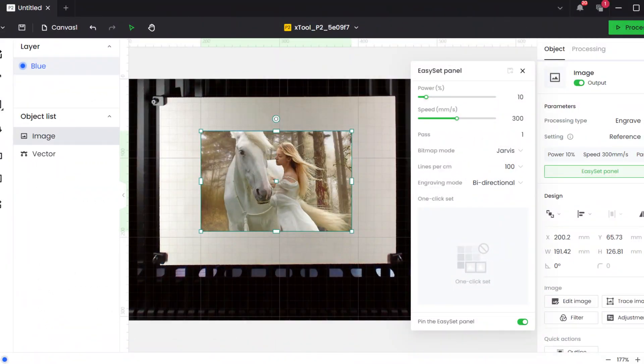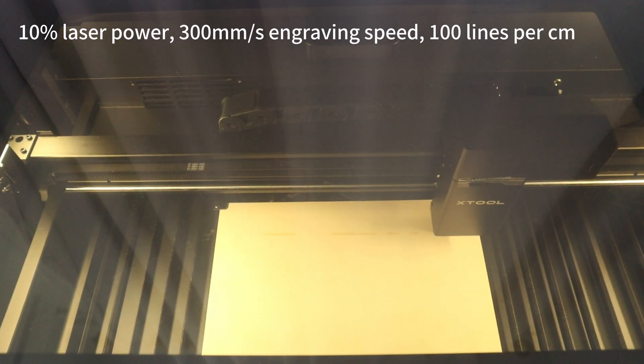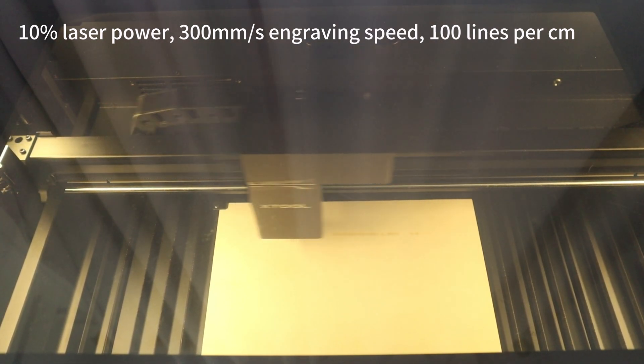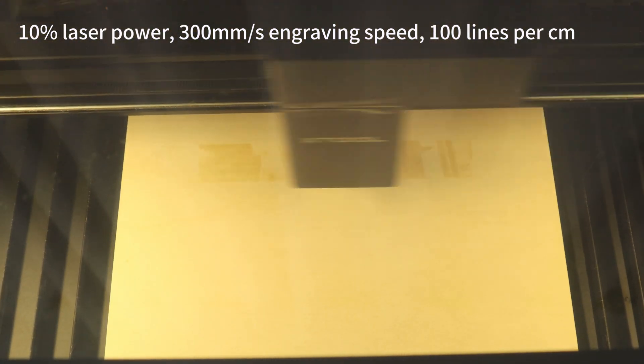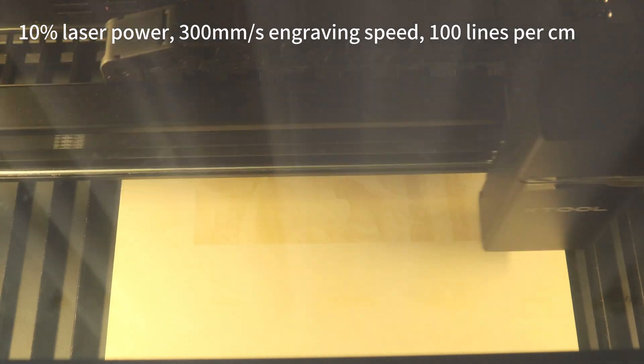Next, I used the X2P2 to engrave images on 3 mm plywood with the engraving parameters of 10% laser power, 300 mm per second engraving speed, and 100 lines per centimeter line density. It took about 20 minutes to complete the engraving.